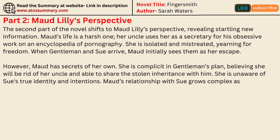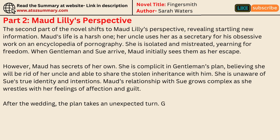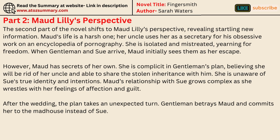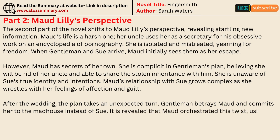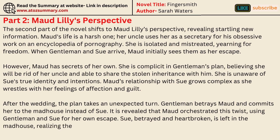Maude's relationship with Sue grows complex as she wrestles with her feelings of affection and guilt. After the wedding, the plan takes an unexpected turn. Gentleman betrays Maude and commits her to the madhouse instead of Sue. It is revealed that Maude orchestrated this twist, using Gentleman and Sue for her own escape. Sue, betrayed and heartbroken, is left in the madhouse, realizing the depth of the deception.